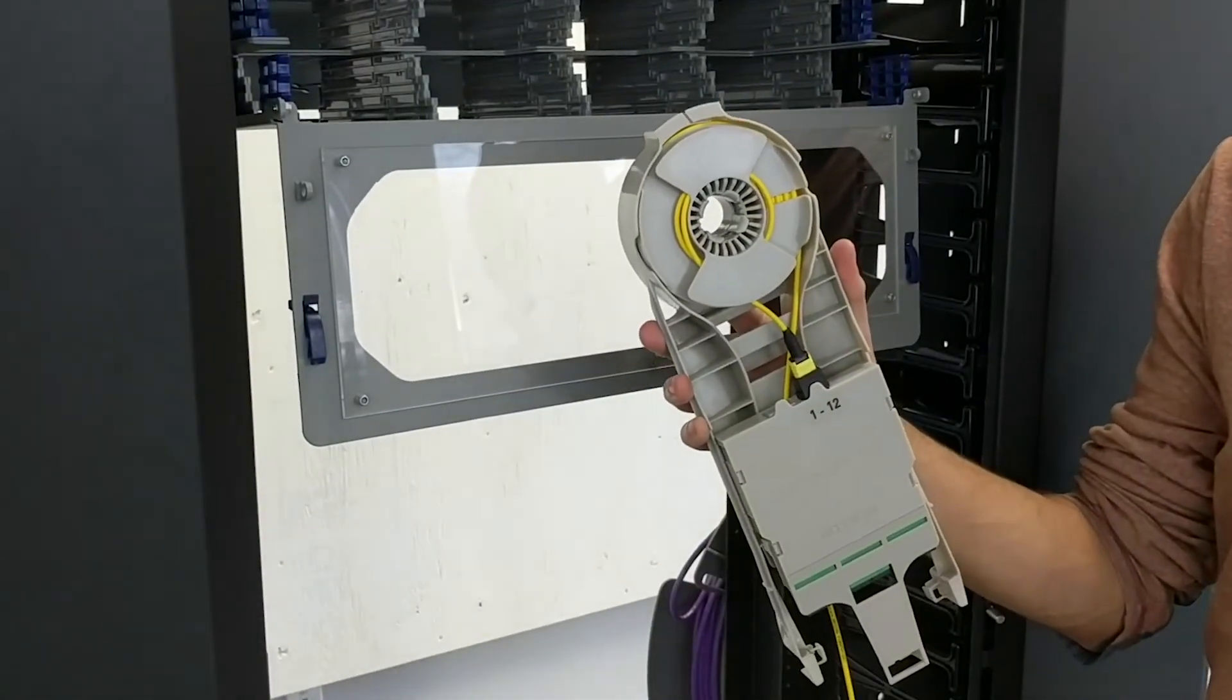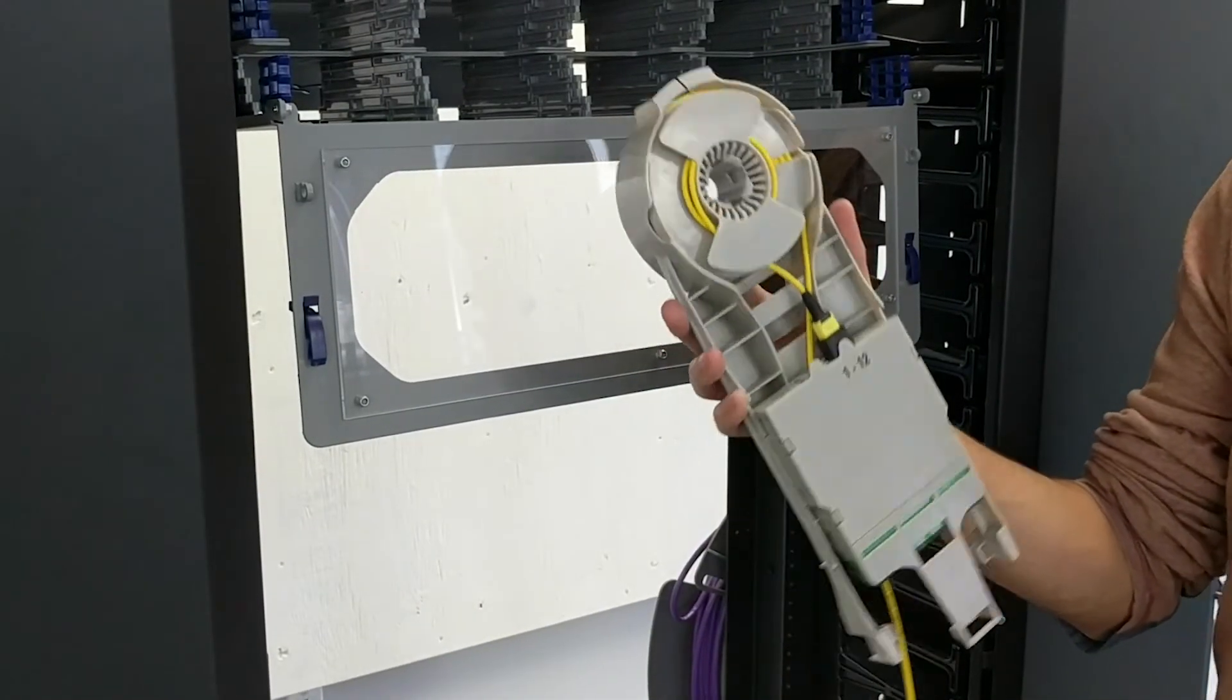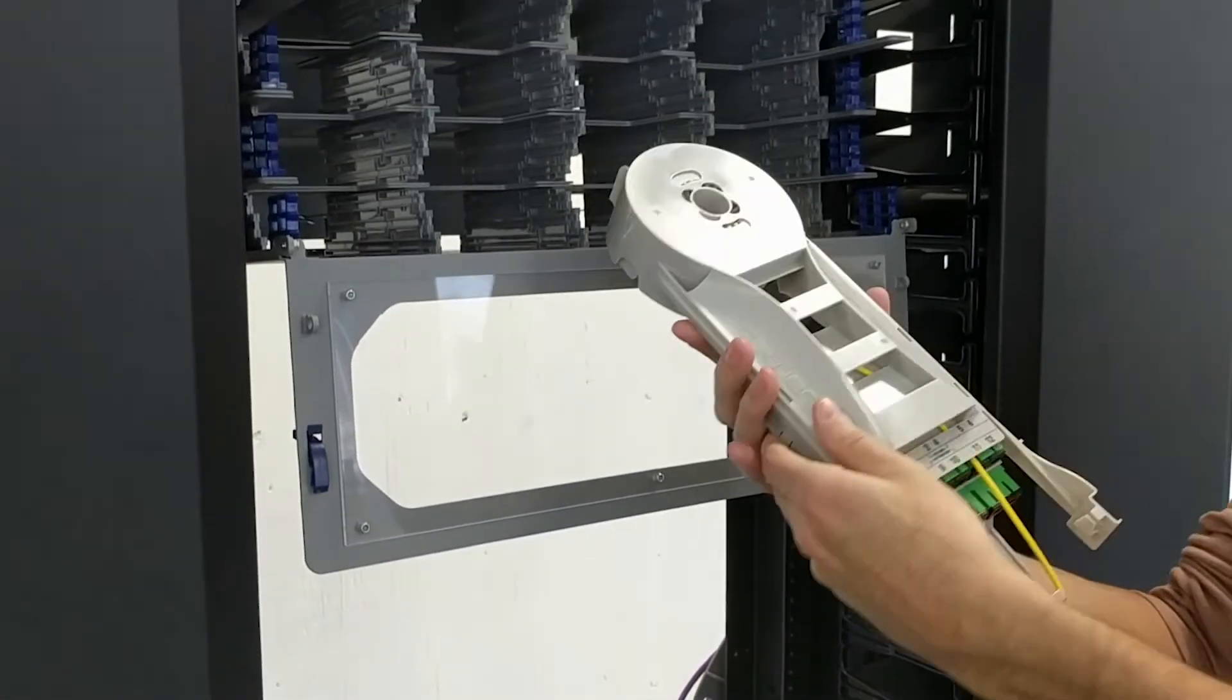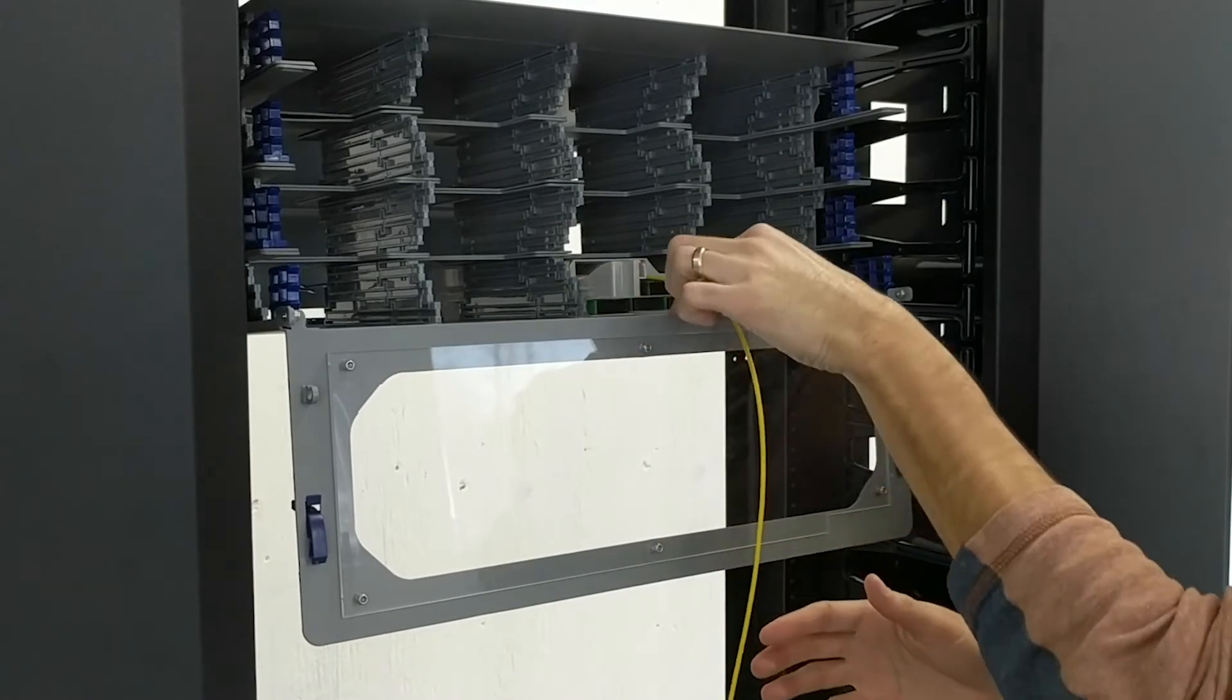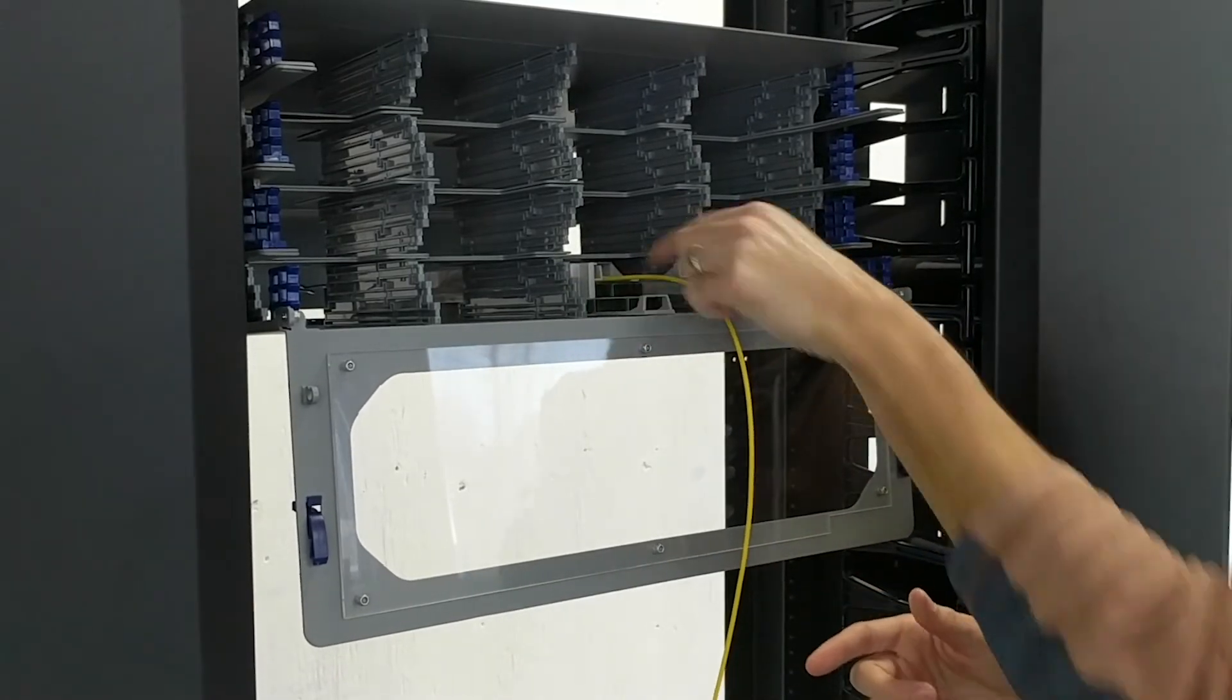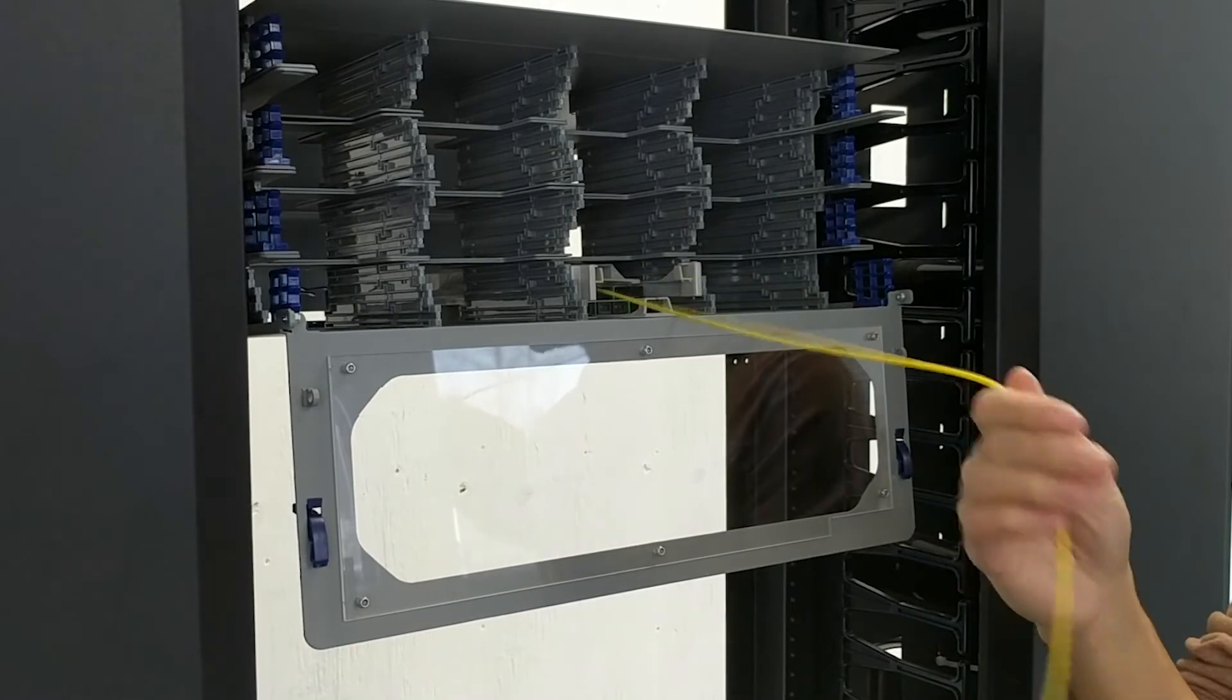That's it. You're done. You can now insert your FlexModule into your desired next step patch panel. Notice again how your cable assembly is locked in place.